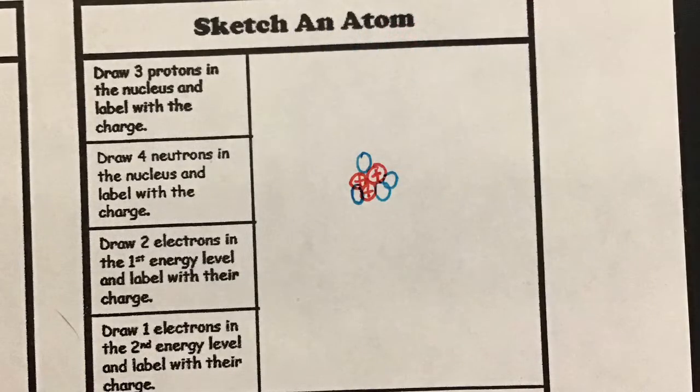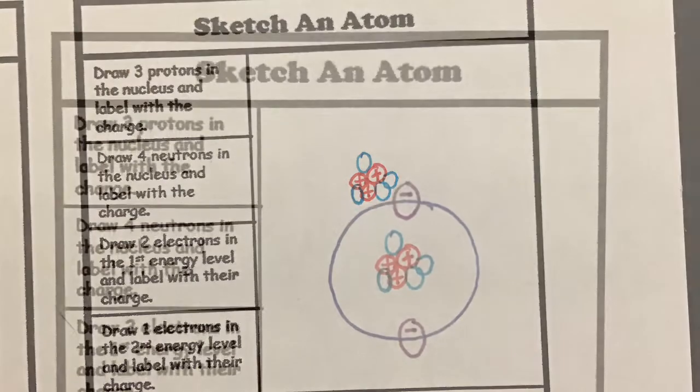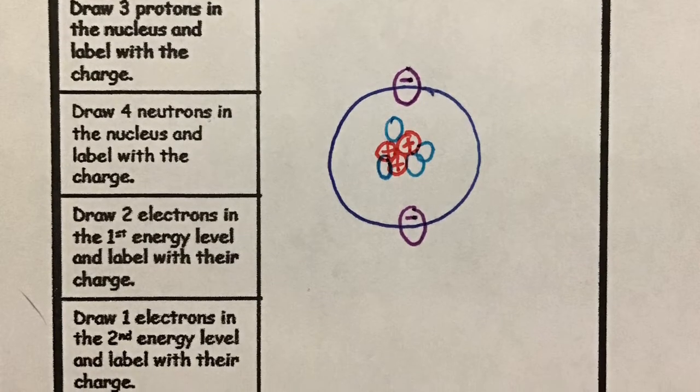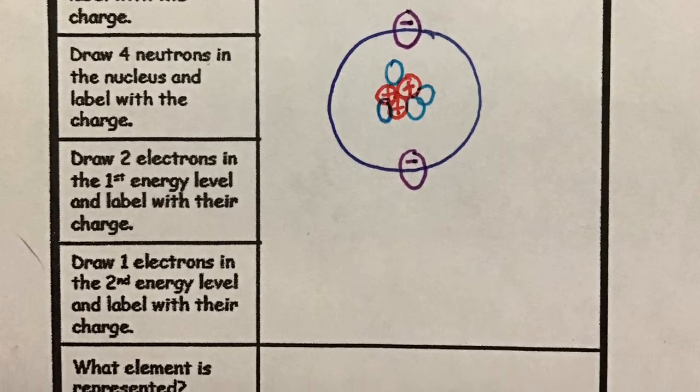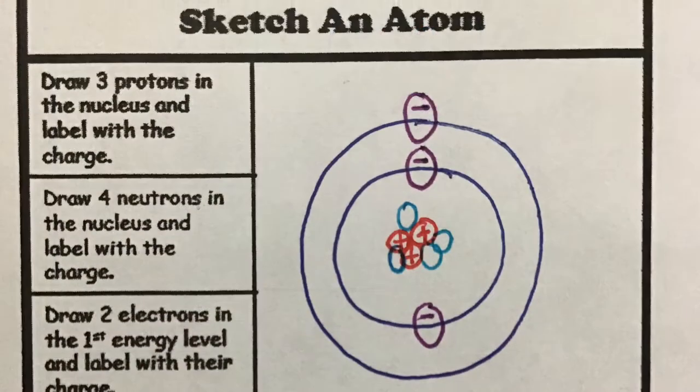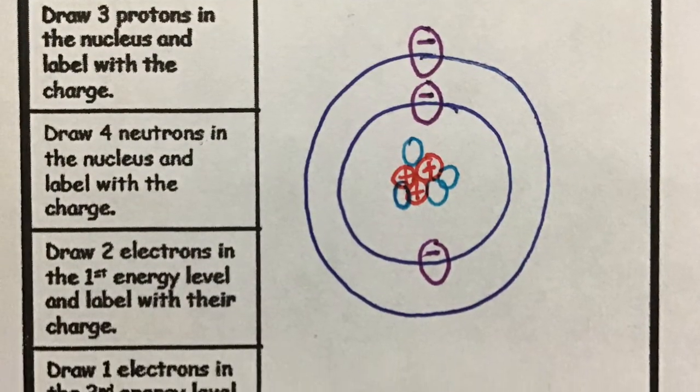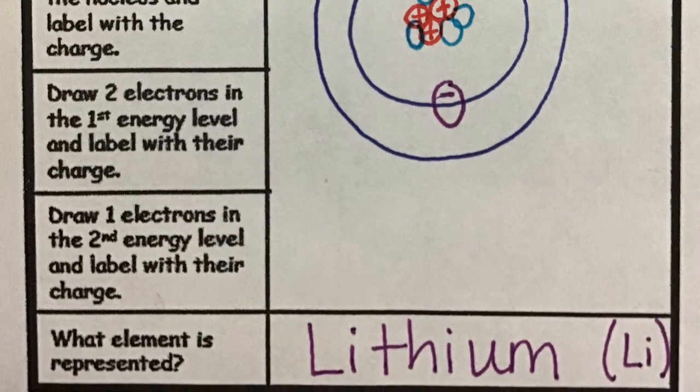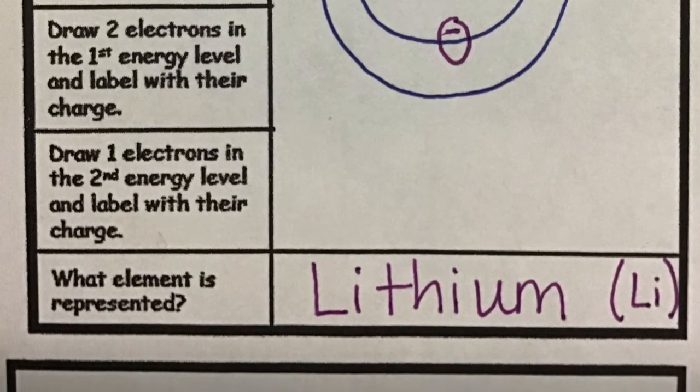An example begins by asking us to draw three protons with positive charges in the center of our model. Next draw four neutrons with no charges in the nucleus. Draw your first energy level and draw two electrons with negative charges to make this energy level full. Draw your second energy level and draw only one negative electron. This element has three protons which means it is lithium or Li.